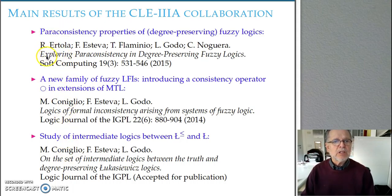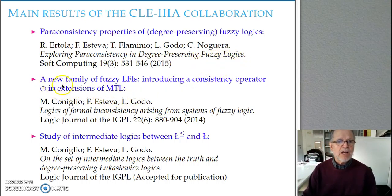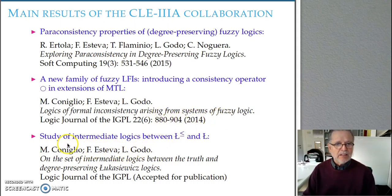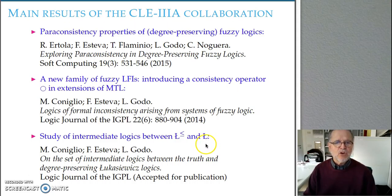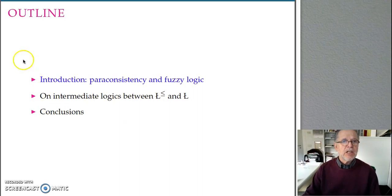The first paper is about the relation between Paraconsistency and degree-preserving Fuzzy Logics. The second one defines a new family of logics of formal inconsistency arising from degree-preserving Fuzzy Logics. And the third one is the study of the intermediate logics between degree-preserving, that is paraconsistent, and truth-preserving Lukasiewicz logic. The talk will consist of an introduction about Paraconsistency and Fuzzy Logic, with the main topic being the study of intermediate logics and some conclusions.